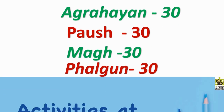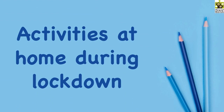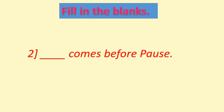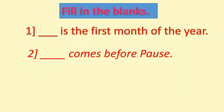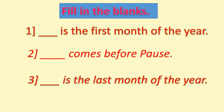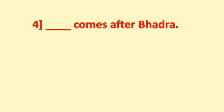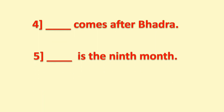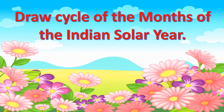Now children, we are going to do some activity. Fill in the blanks: 1st — blank is the first month of the year. 2nd — blank comes before Posh. 3rd — blank is the last month of the year. 4th — blank comes after Bhadra. 5th — blank is the 5th month. Draw the cycle of the months of the Indian solar year.